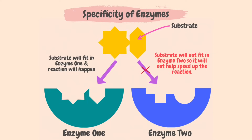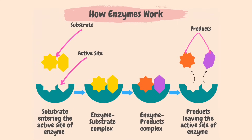However, the yellow substrate will not be able to perfectly fit into the active site of enzyme-2 because the shapes of the substrate and the active site are not matching, so enzyme-2 will not work in this reaction. Therefore, enzymes are specific — an enzyme which normally acts on one substance will not act on a different one. As the enzyme binds with the substrate, an enzyme-substrate complex is formed. The reaction then occurs on the enzyme and the enzyme-product complex is formed. The products eventually leave the enzyme, and the enzyme itself is unchanged at the end of the reaction.